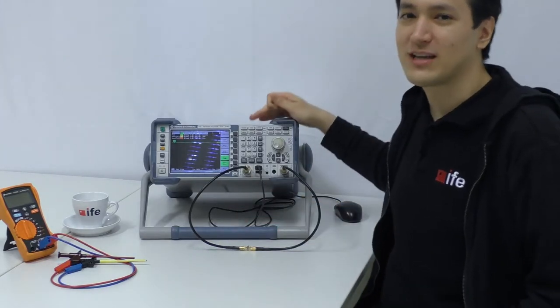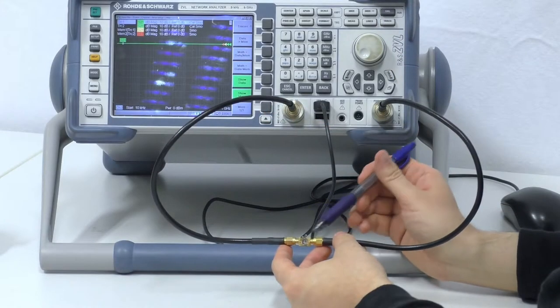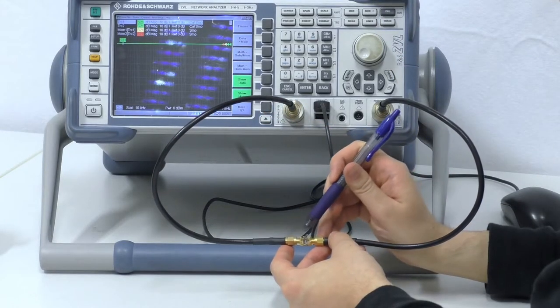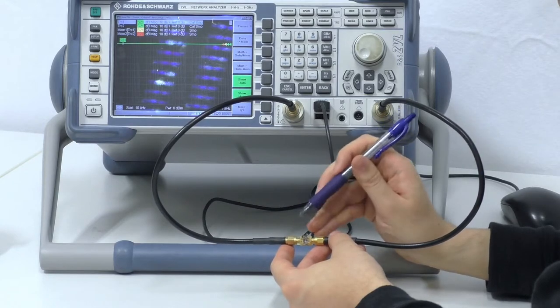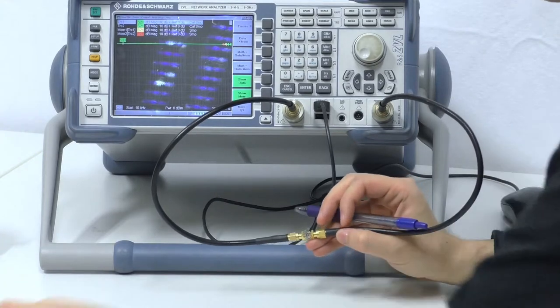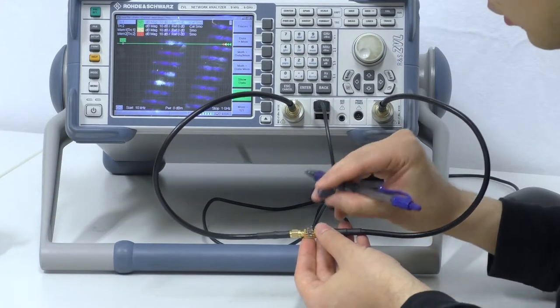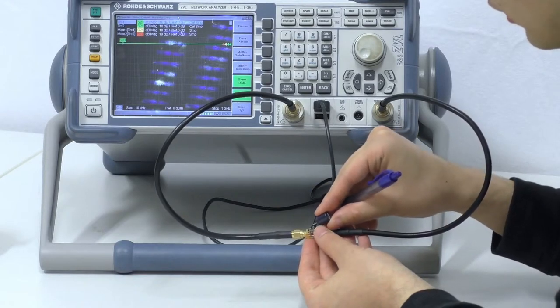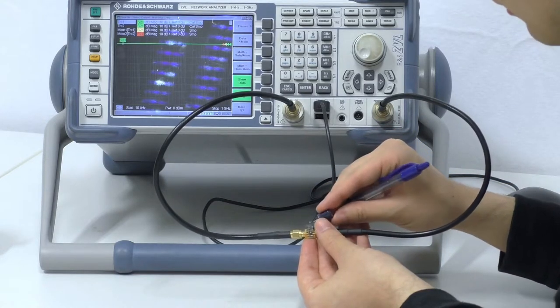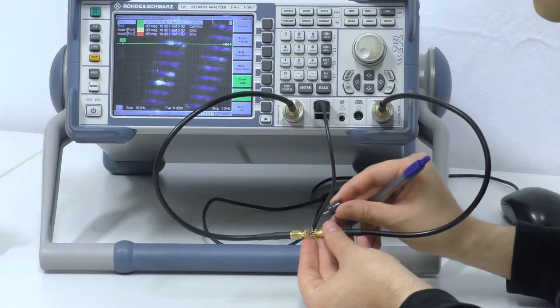Today I've brought the Vector Network Analyzer with me. There are two SMA connectors and we can place some capacitors here. So those capacitors are placed in a shunt orientation so the plus pin of our capacitor is on the middle pin of our SMA connector and the minus pin of our capacitor is placed here on the reference connection of our SMA connector.